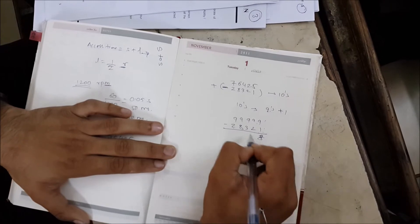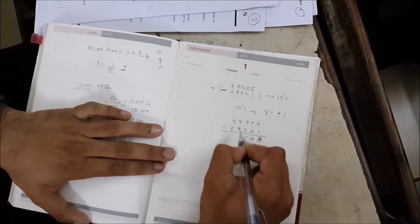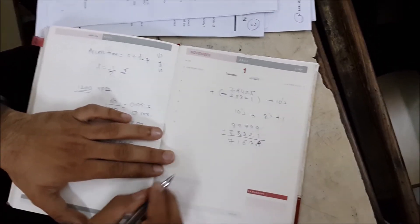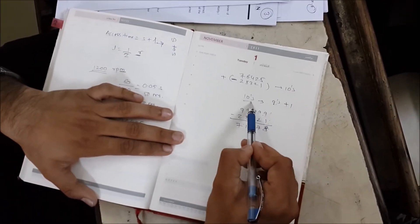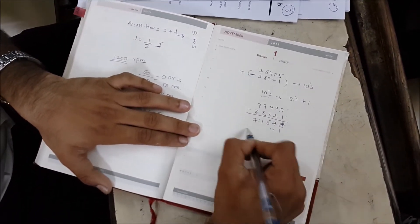9 minus 1 is 8, this is 7, this is 6, this is 1, this is 7. So this is your nine's complement: 71678. But we have to find ten's complement, which is plus 1.